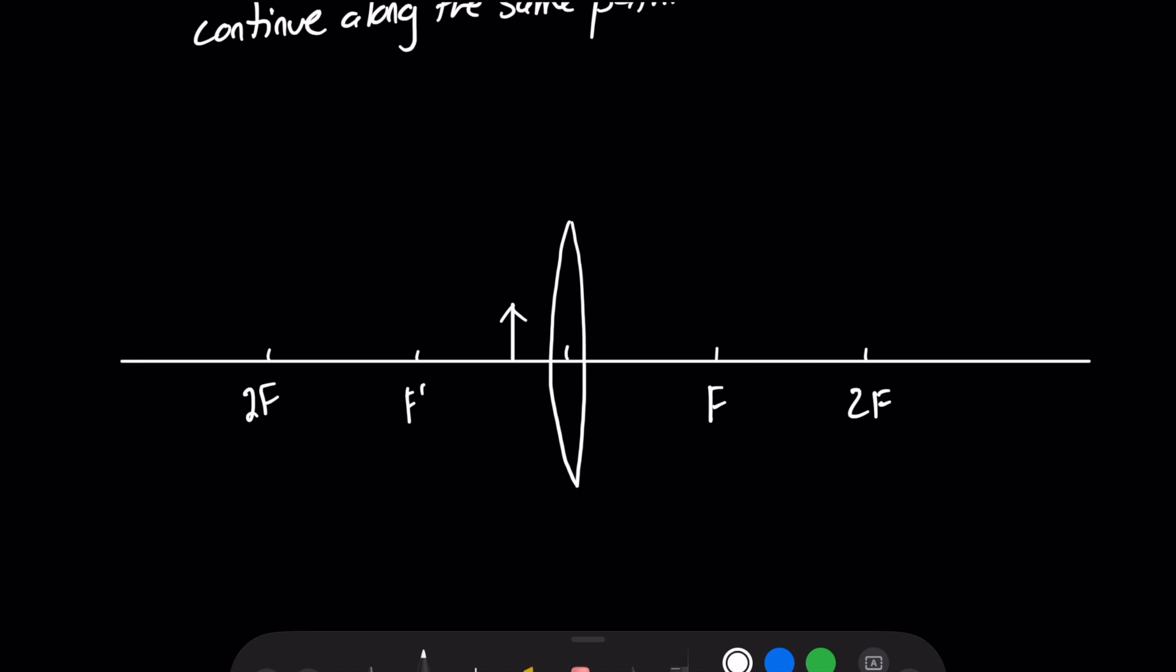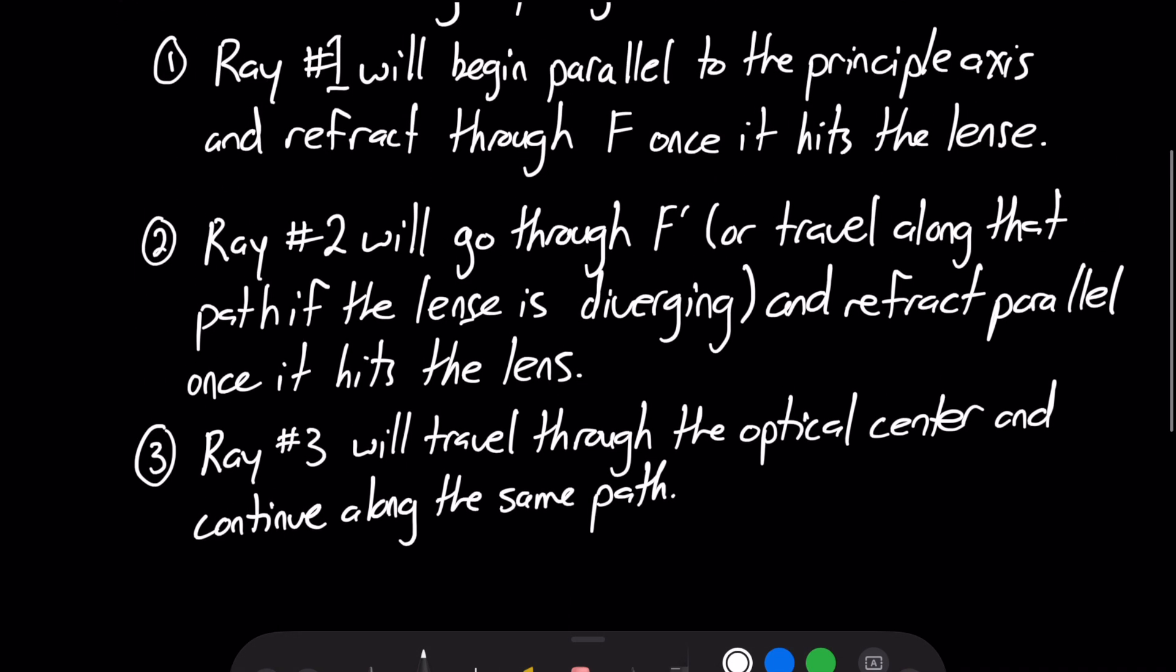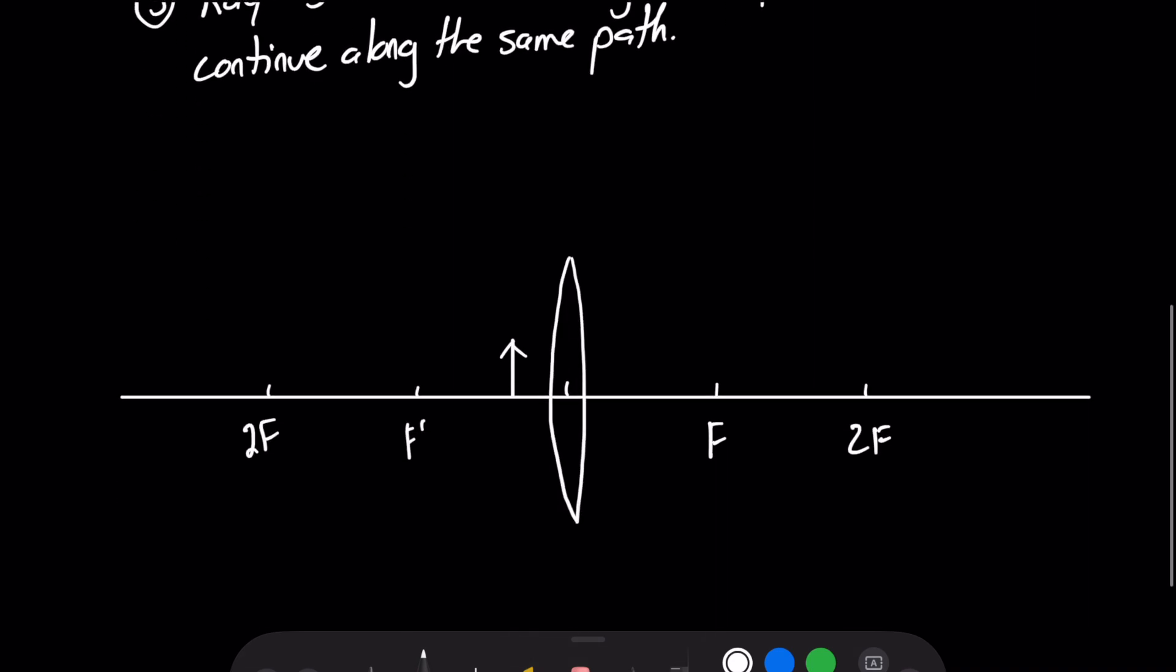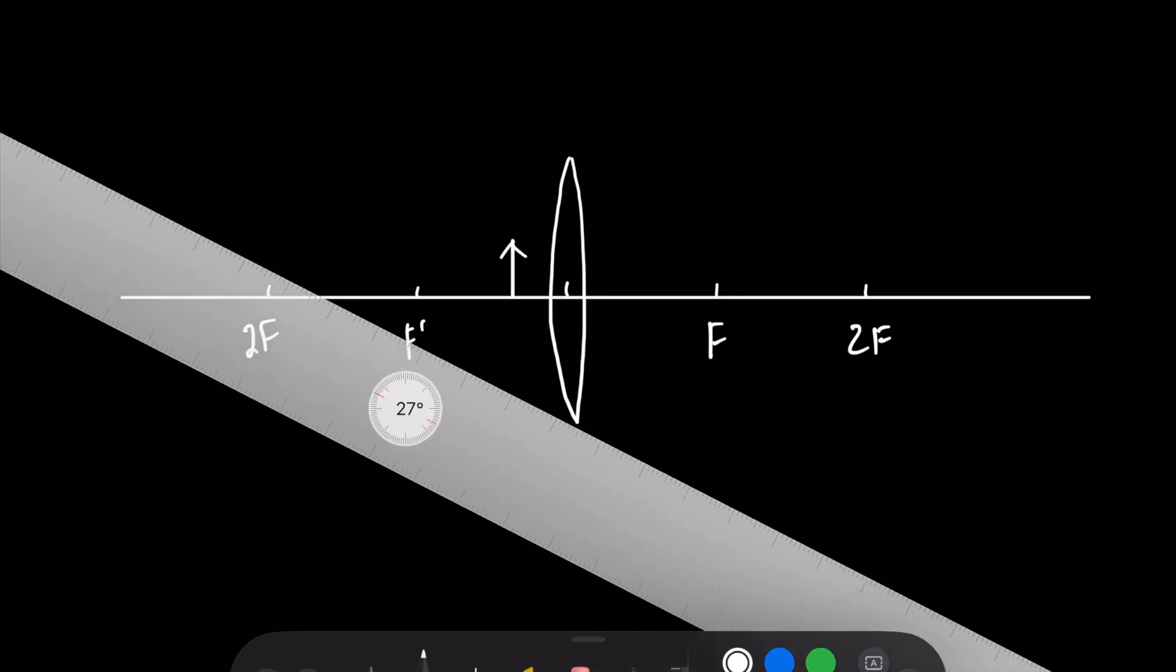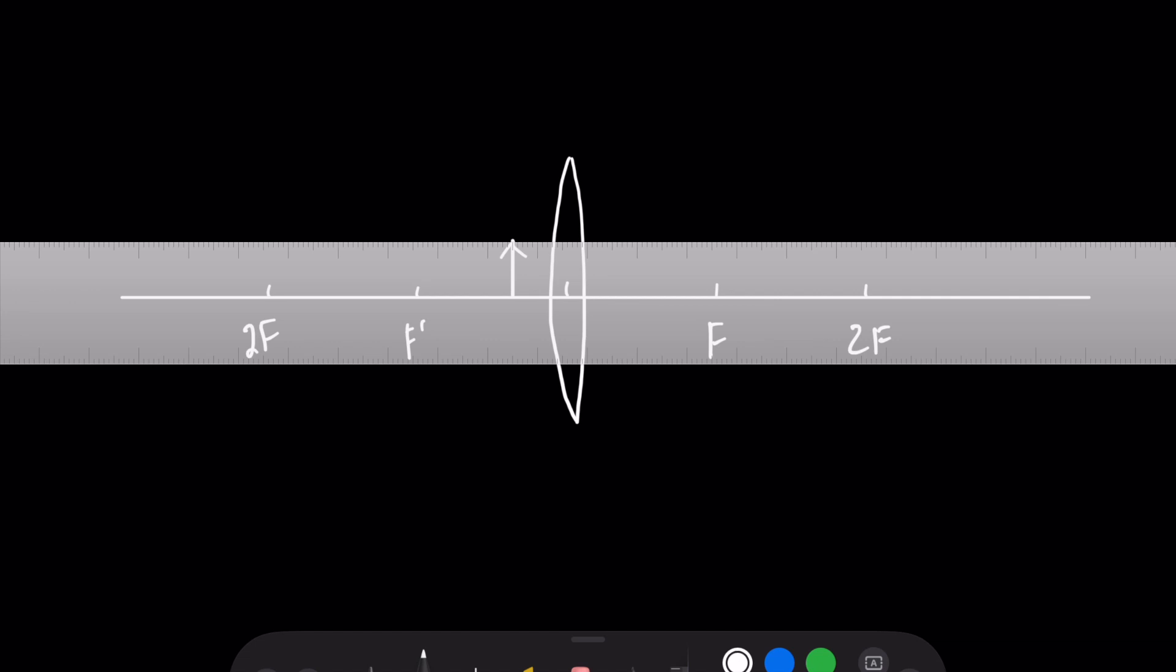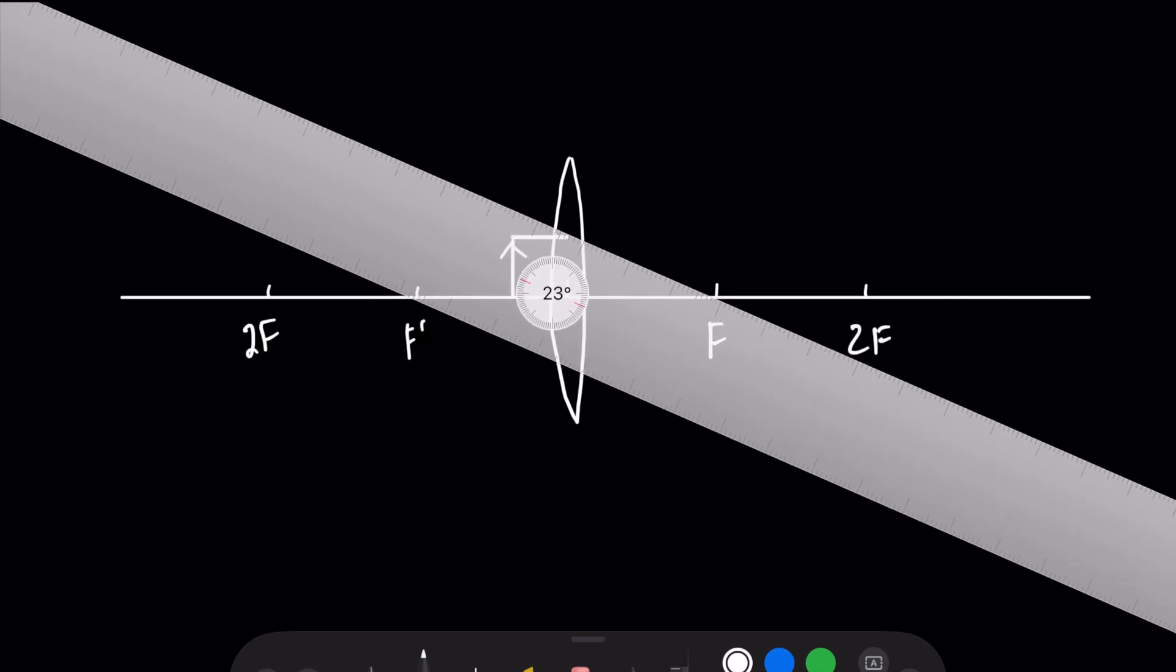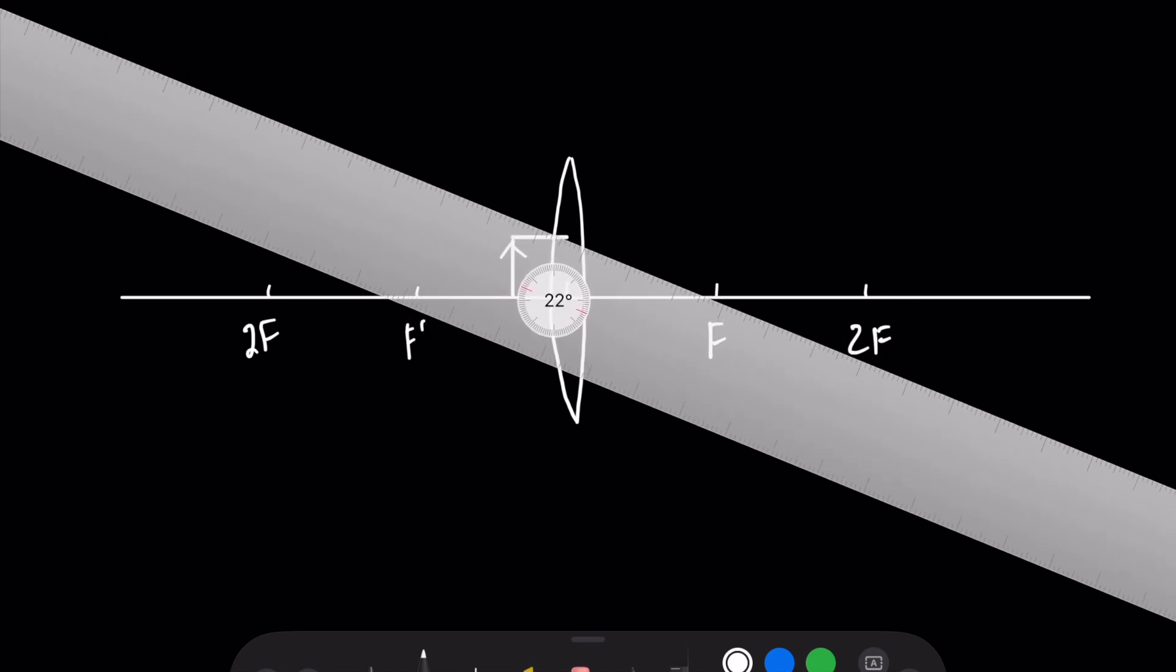Okay, so we will first look at rule number one here. It says that ray number one will begin parallel to the principal axis and refract through F once it hits the lens. So I'll bring out my ruler here and let's follow that rule to a T. So we have the top of our object and we are going to draw a ray parallel to the principal axis. And as soon as it hits that lens,